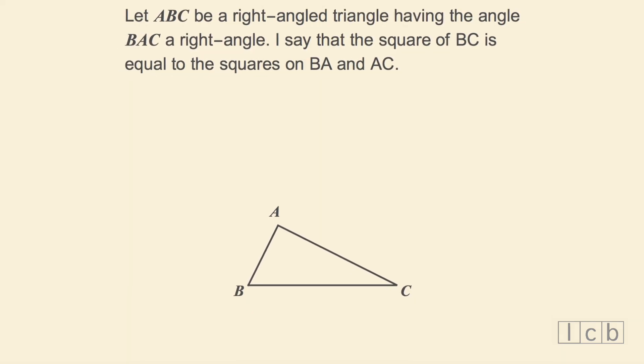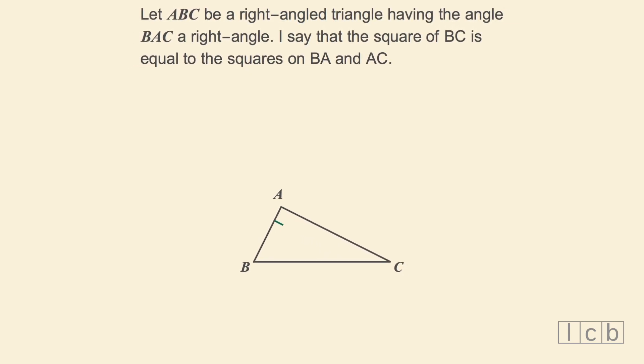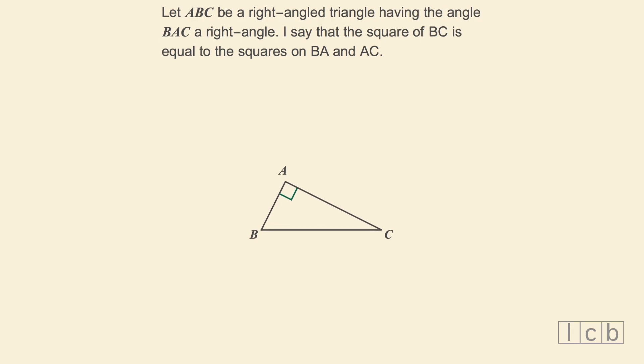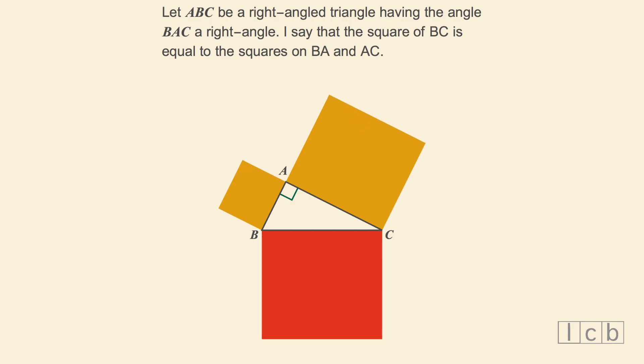Let ABC be a right-angled triangle having the angle BAC a right angle. I say that the square of BC is equal to the squares on BA and AC.